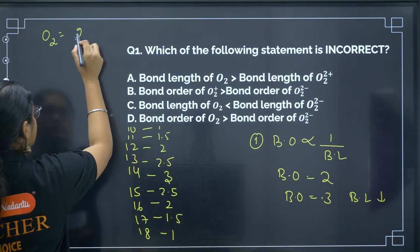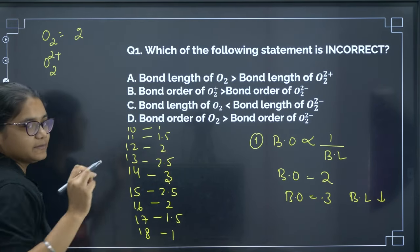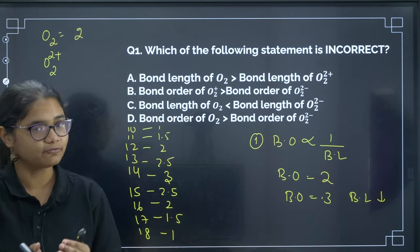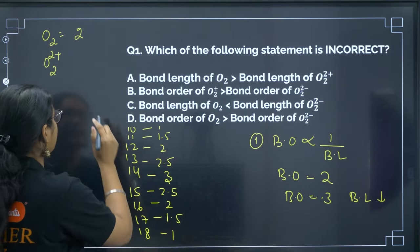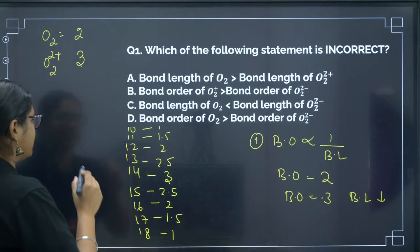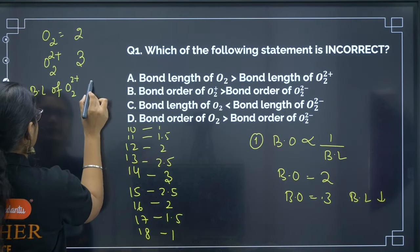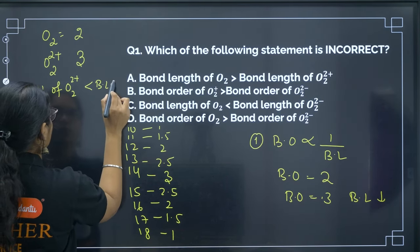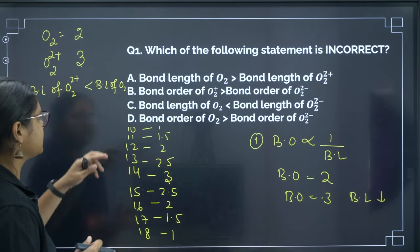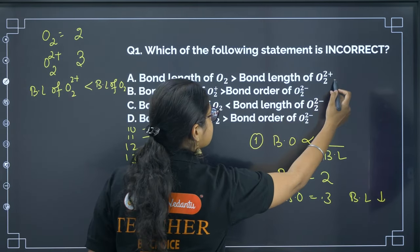For O2²⁺, you remove 2 electrons: 8 + 8 = 16 minus 2 = 14 electrons. For 14 electrons the bond order is 3. Since the bond order is higher for O2²⁺, its bond length will be less than that of O2. The statement given says bond length of O2 is greater than that of O2²⁺ — that is a correct statement. Since we need to find the incorrect statement, we move on.